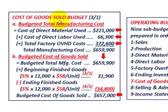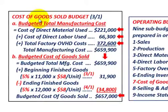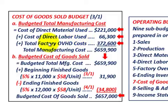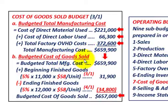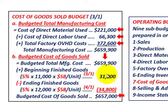To summarize: to prepare the cost of goods sold budget, first determine your total budgeted manufacturing cost — that equals direct materials used plus direct labor used plus total factory overhead (both variable and fixed). Then take that total manufacturing cost, add beginning finished goods inventory, and subtract ending finished goods inventory, and that gives you your budgeted total cost of goods sold.